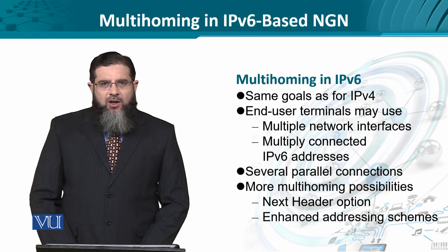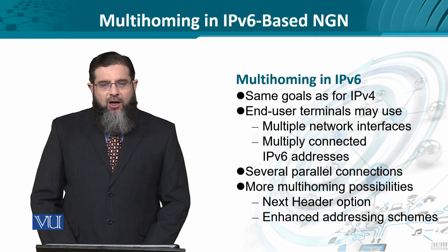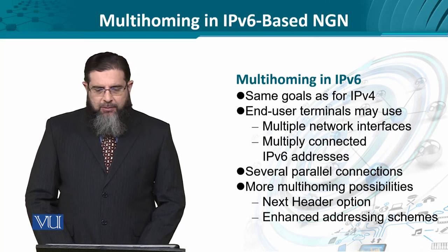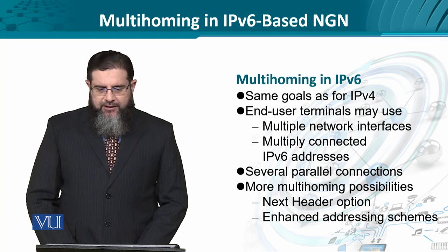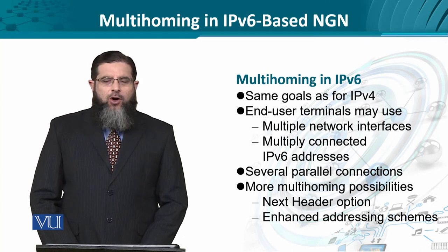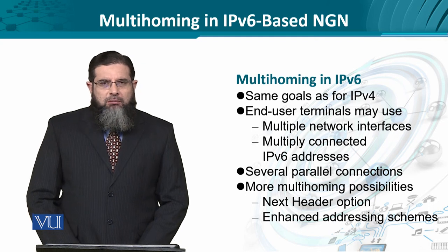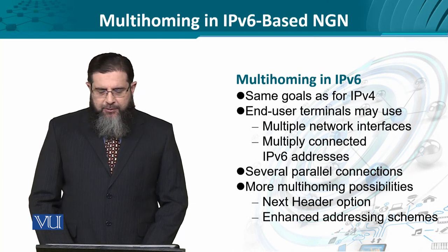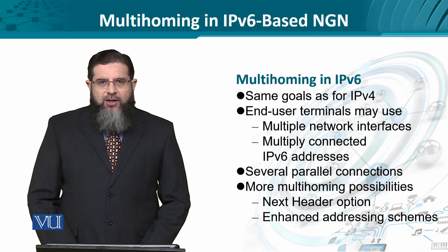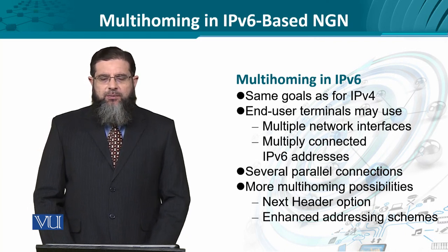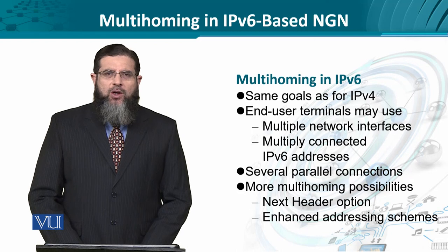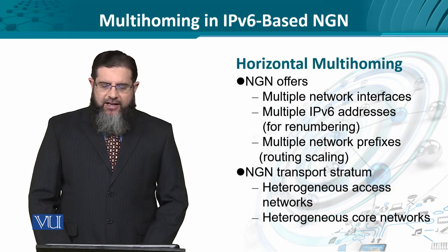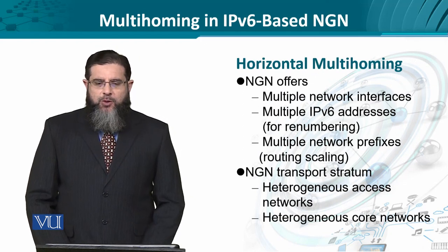This makes multihoming not only exciting, but the very structure of the IPv6 packet format complements it. The next header option in IPv6 allows multiple connections to have their own corresponding header in the IPv6 packet. We also have enhanced addressing schemes, because while IPv4 was tied to classful addressing or CIDR, in IPv6 we can adopt any addressing scheme pertinent to a certain context.